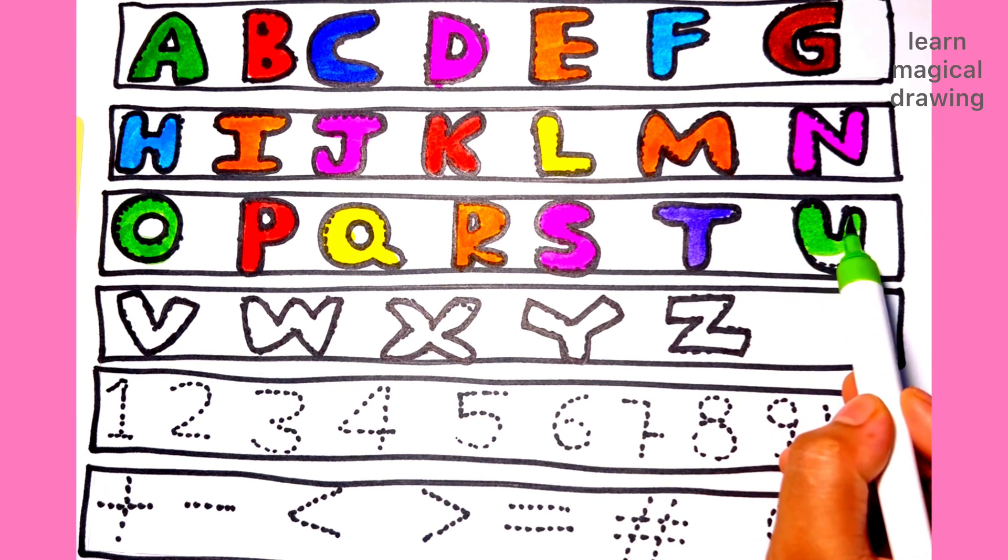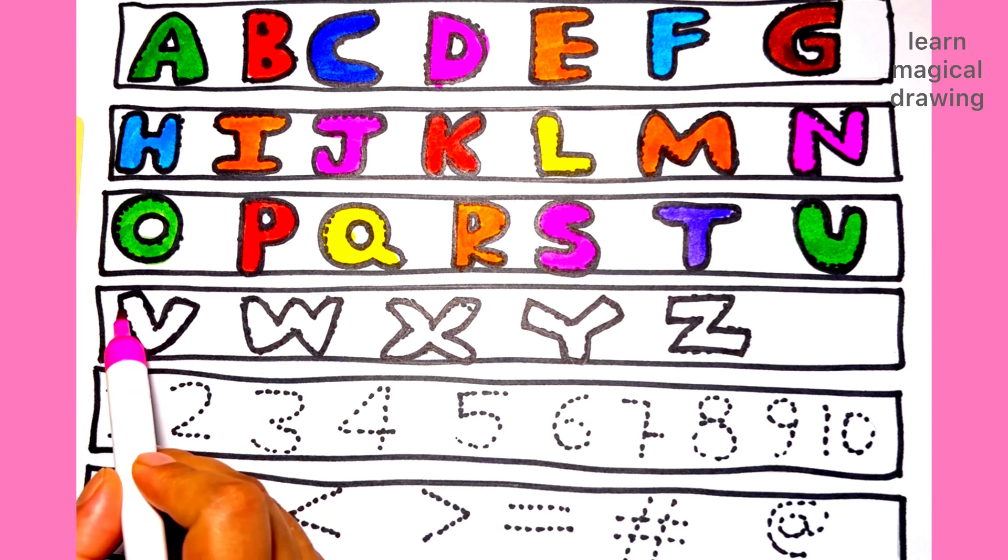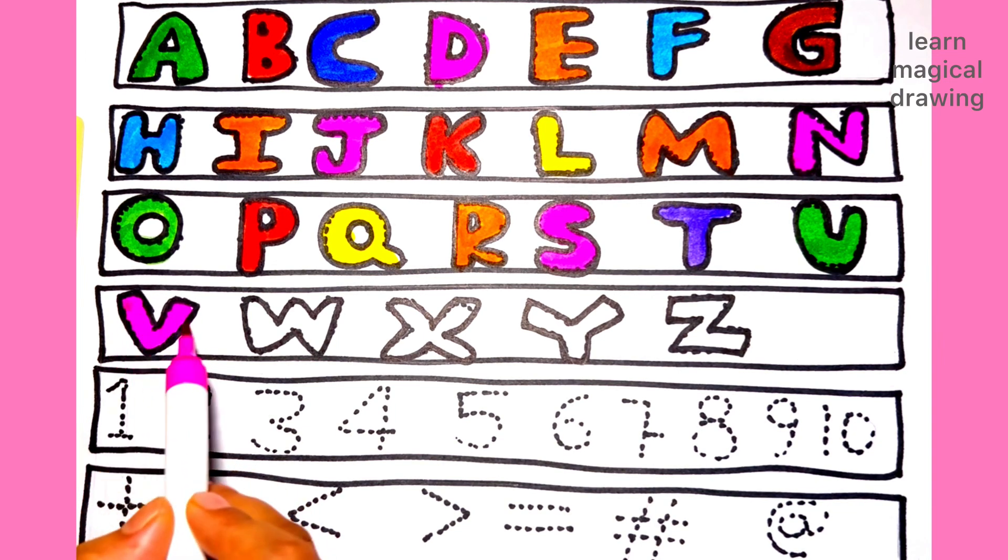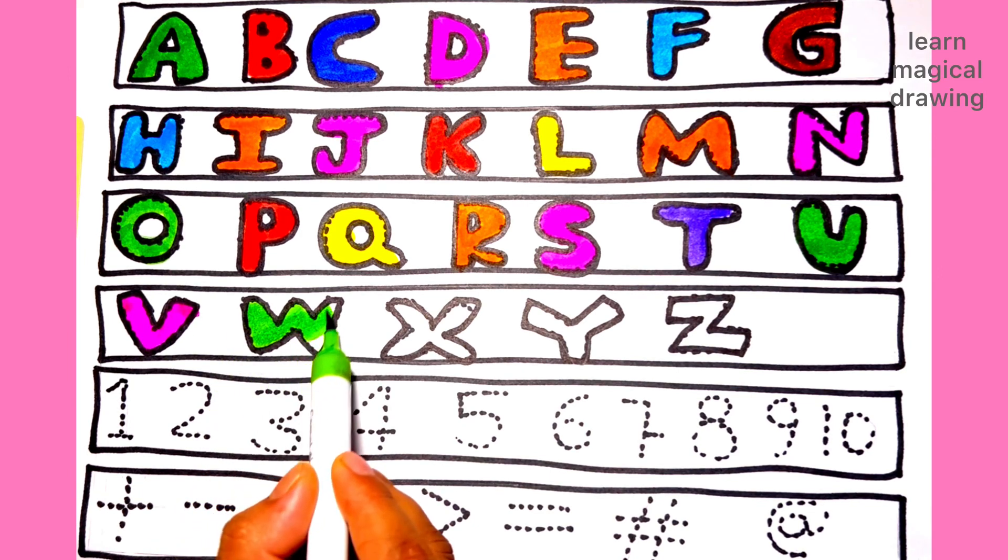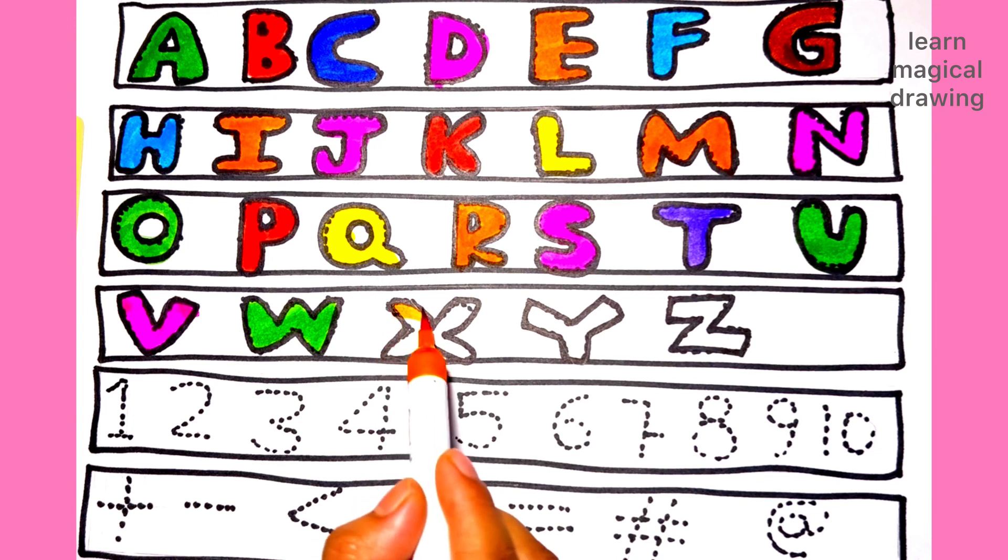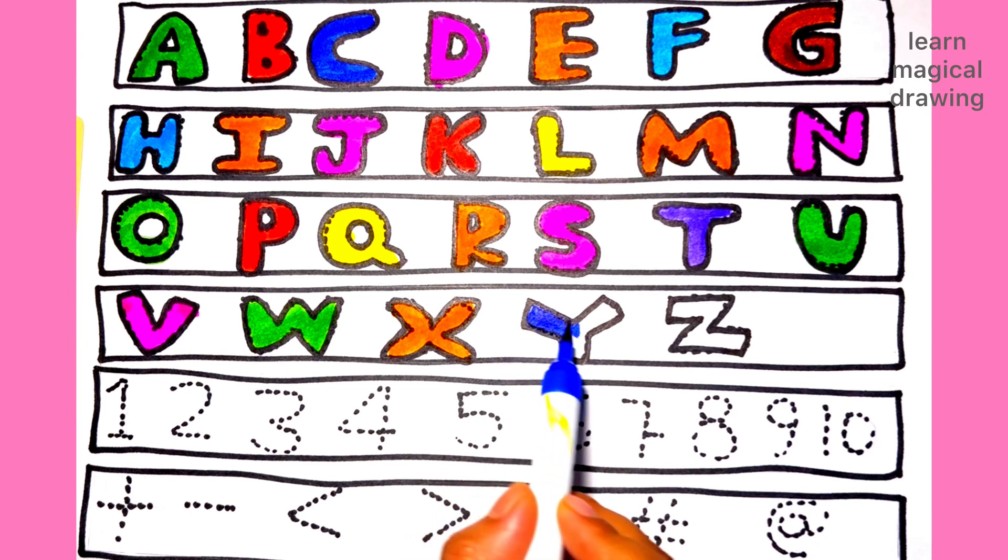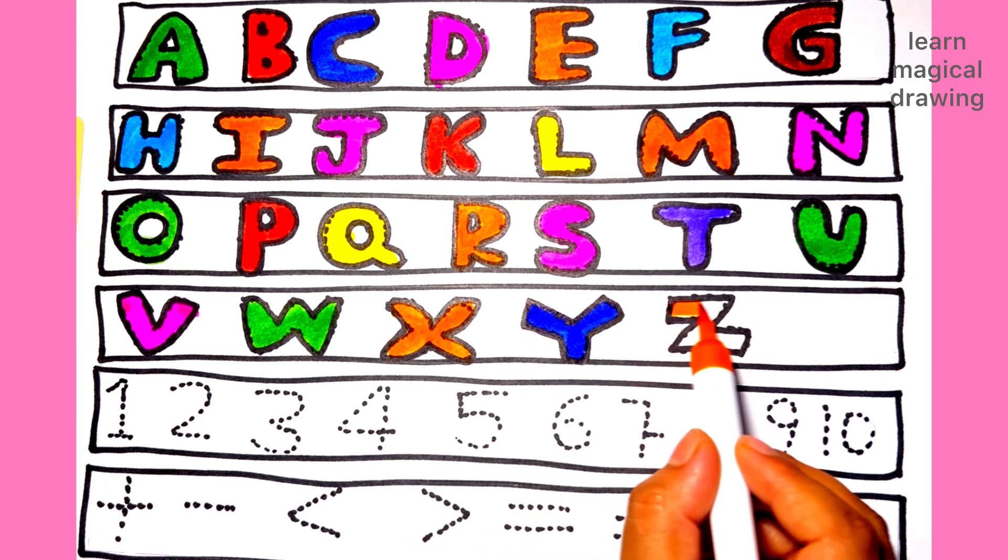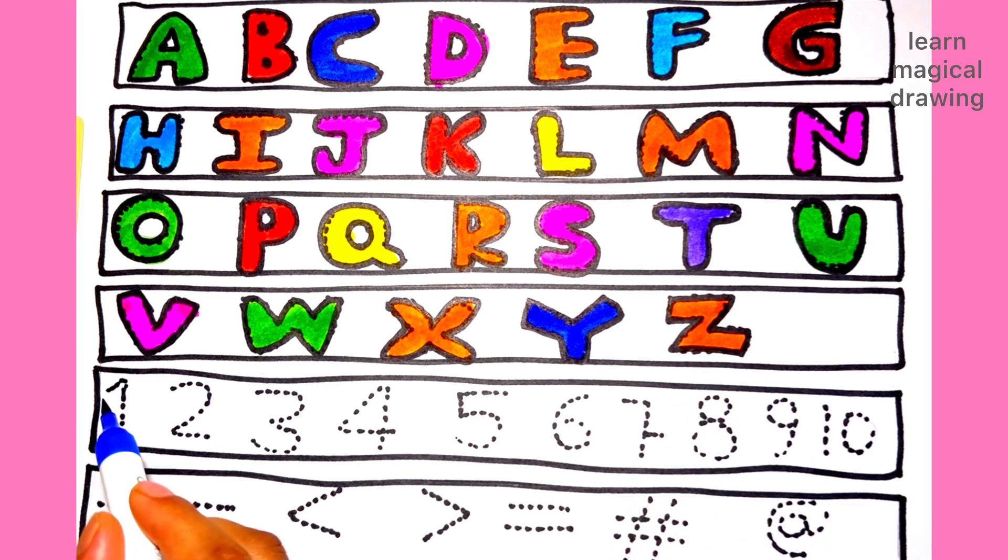U, U, U for uniform. V, V, V for vegetable. W, W for watch. X, X for xylophone. Y, Y for yak. Z, Z, Z for zebra. Let's learn numbers.